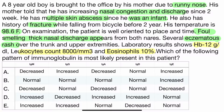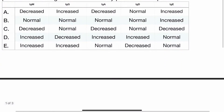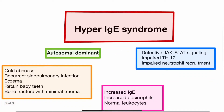Cold abscess with normal leukocyte count and increased eosinophils — there are three major symptoms: cold abscess, sinus infection, and eczema. This is most consistent with hyper-IgE syndrome, an autosomal dominant disorder. Patients present with cold abscesses, recurrent sinopulmonary infections, eczema, retained baby teeth, and bone fractures with minimal trauma.